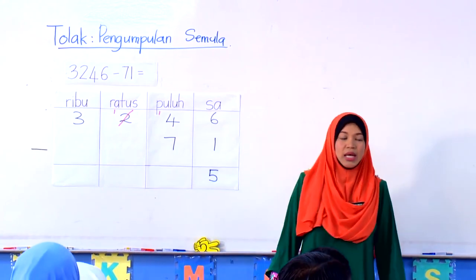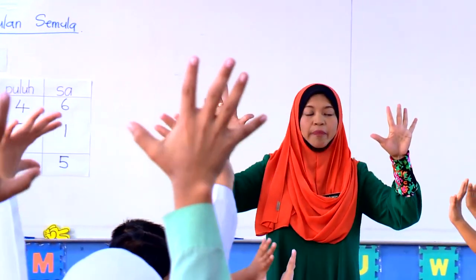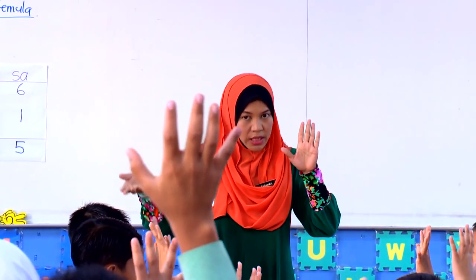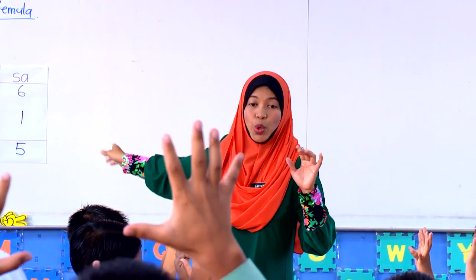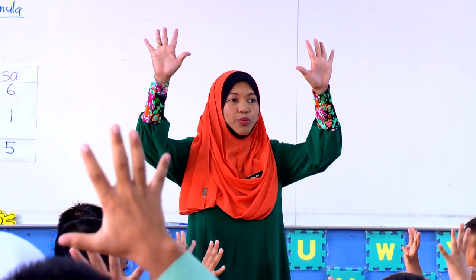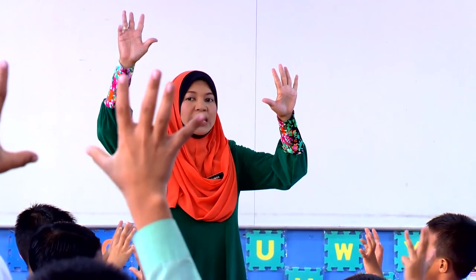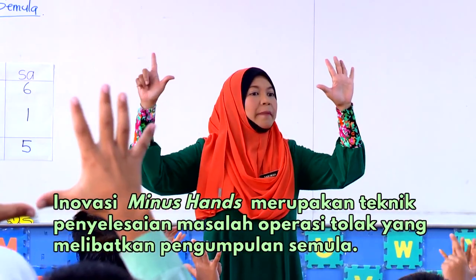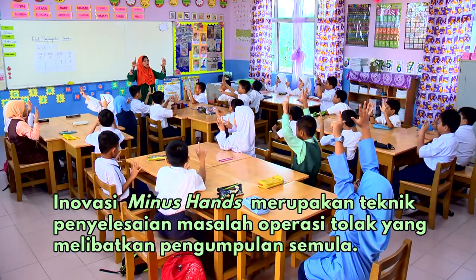Sekarang ini, kamu gunakan 10 jari kamu. 10 jari kamu, kamu gunakan. Kita tadi 4 — kita akan kira nombor selepas itu, selepas 4 sehingga kepada nilai 7. Dari 10 tadi, keluarkan. Kita kira nombor selepas 4: 5, 6, 7. Berapa jari kamu yang masih terbuka? 7.